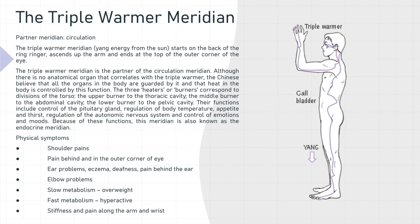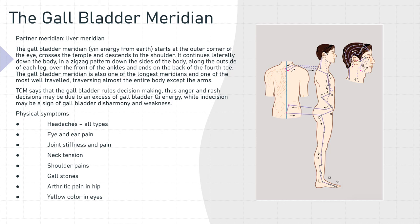The partner meridian for the gallbladder is the liver meridian. The gallbladder meridian — yin energy from the earth — starts at the outer corner of the eye, crosses the temple, and descends to the shoulder. It continues laterally down the body in a zigzag pattern, down the sides of the body, along the outside of each leg, over the front of the ankles, and ends on the back of the fourth toe. The gallbladder meridian is also one of the longest meridians, traversing almost the entire body except for the arms. Traditional Chinese medicine says that the gallbladder rules decision making; thus, anger and rash decisions may be due to an excess of gallbladder Qi energy, while indecision may be a sign of gallbladder disharmony and weakness.